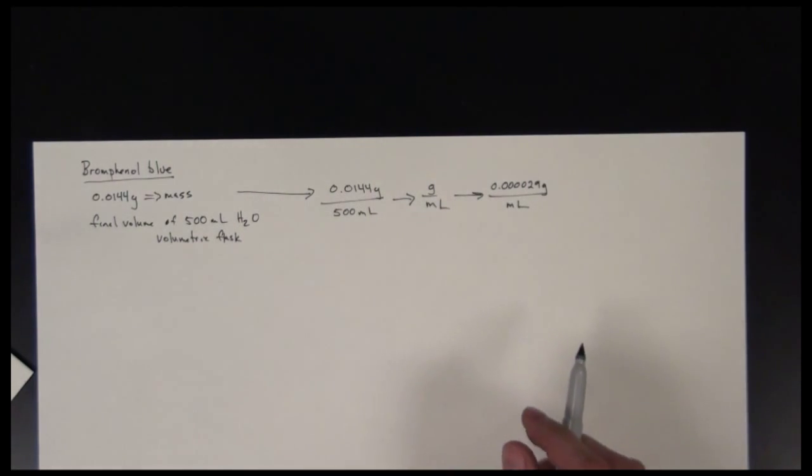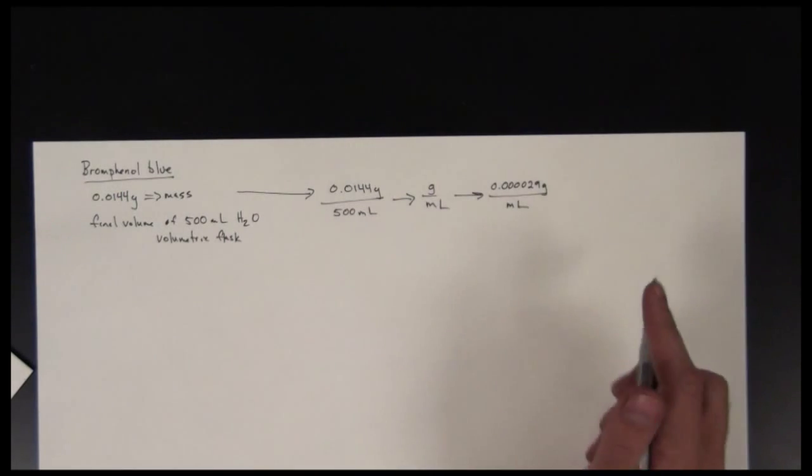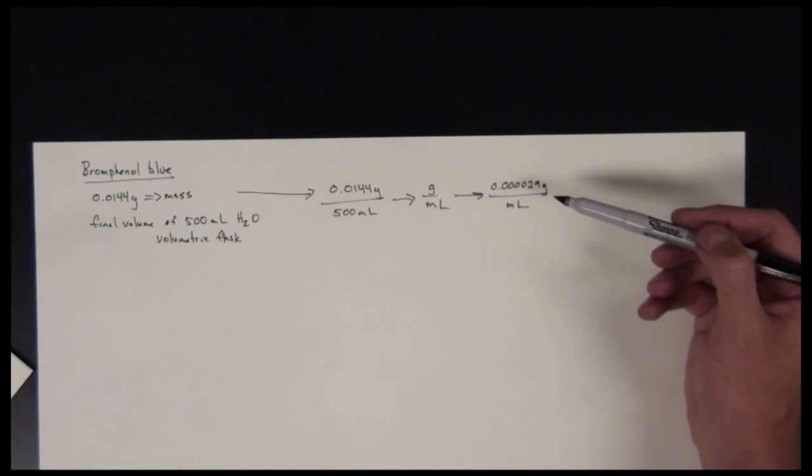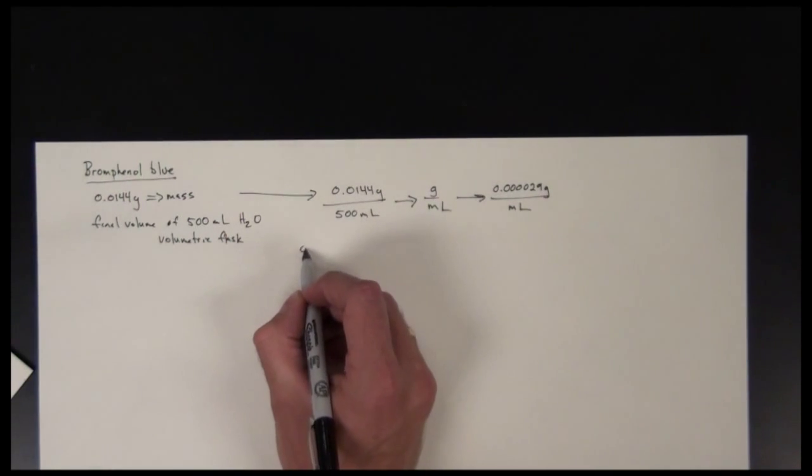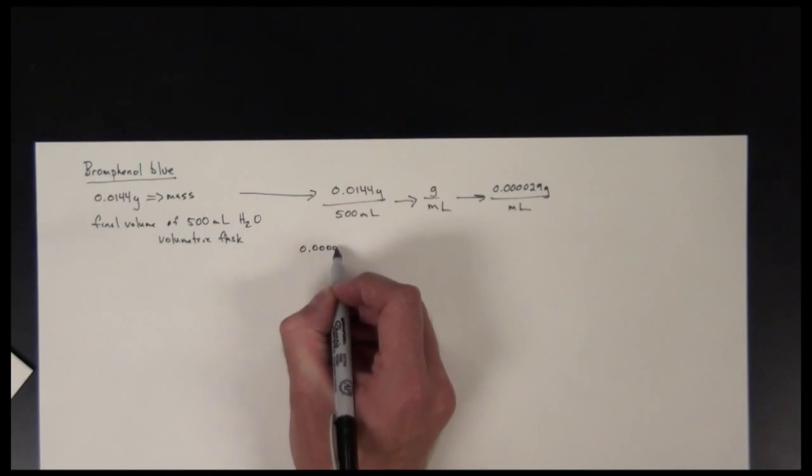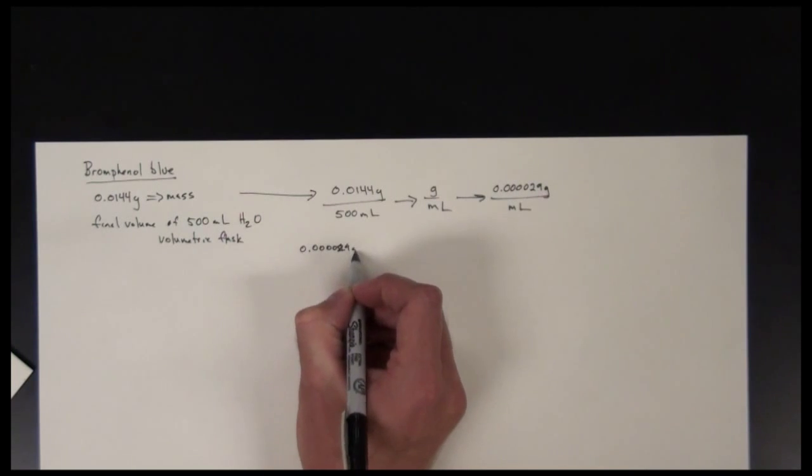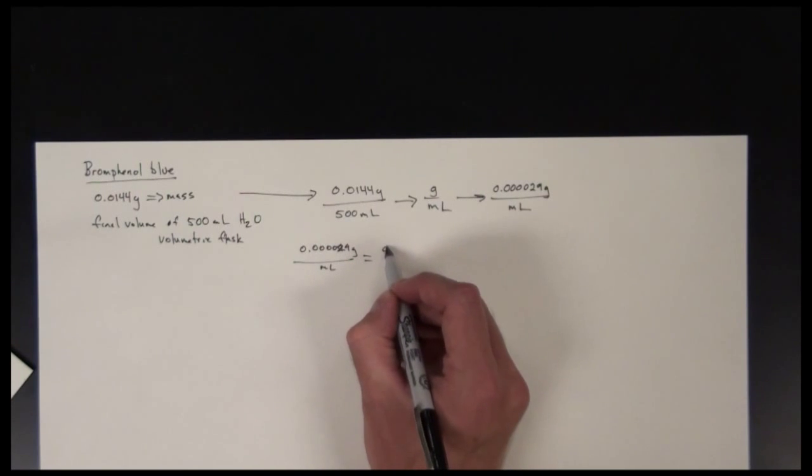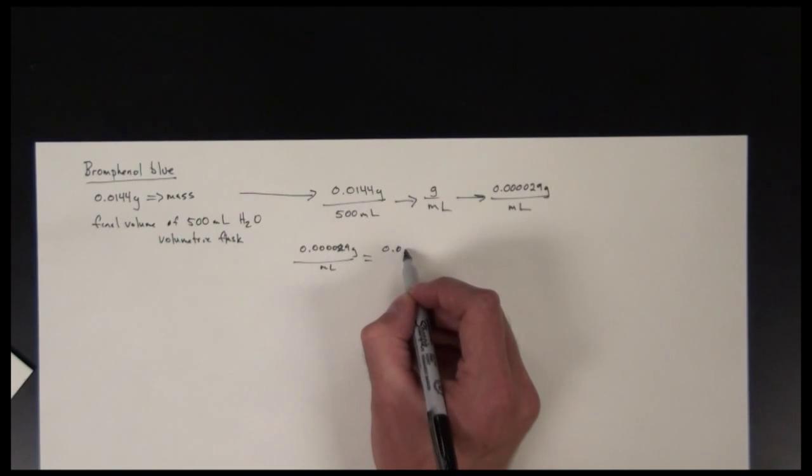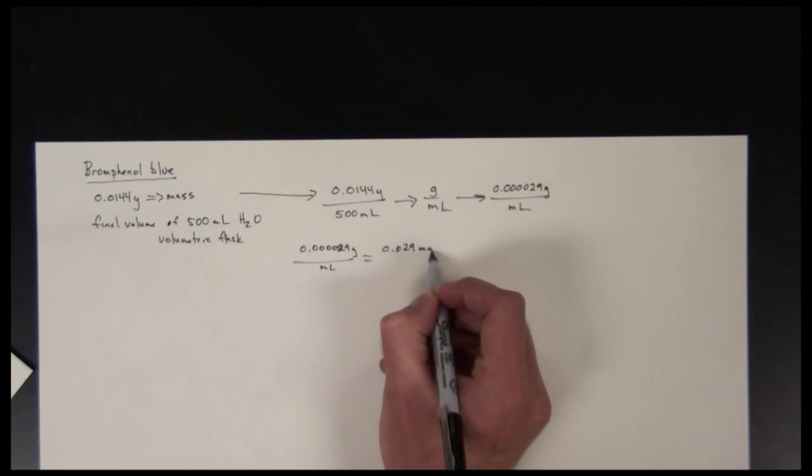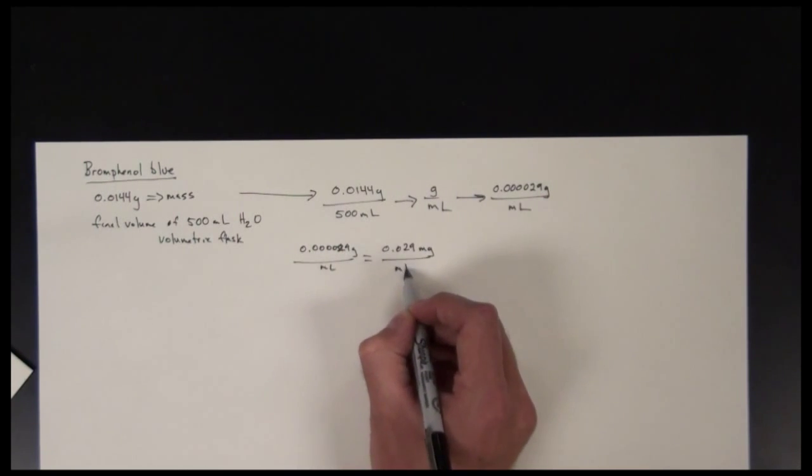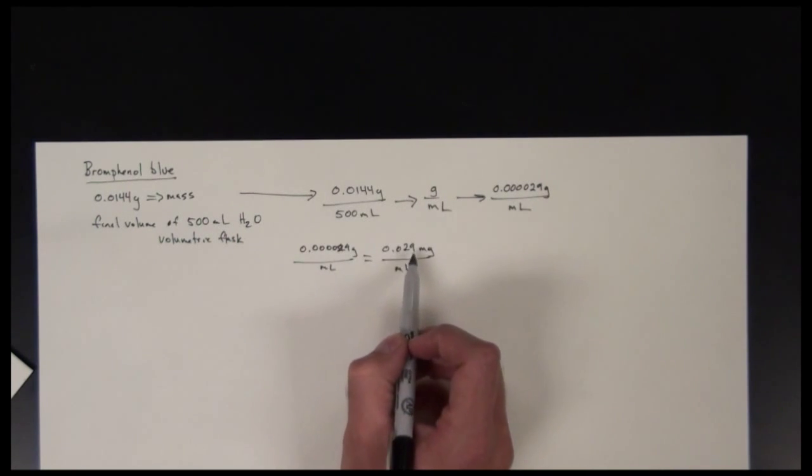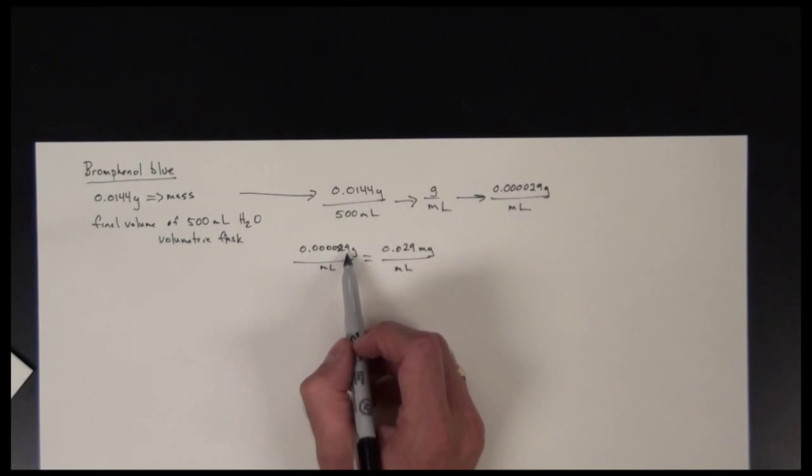Now that's not the most user-friendly way to communicate about this, so we can start to move these decimal points to get the units that make this desirable. So 0.000029 grams per mil is equivalent to 0.029 milligrams per milliliter. I'm just moving this over to a smaller unit, so there's more of these smaller units in this bigger unit.